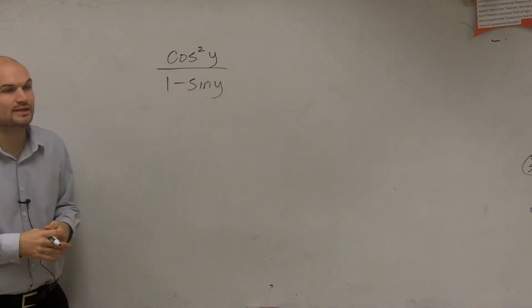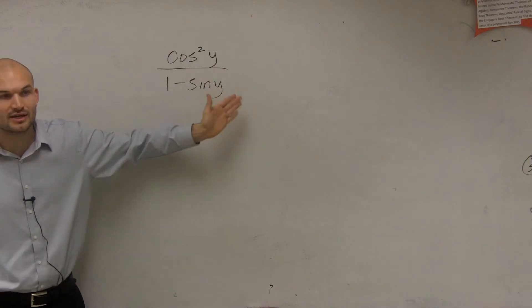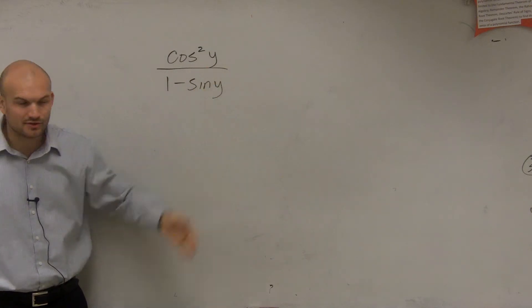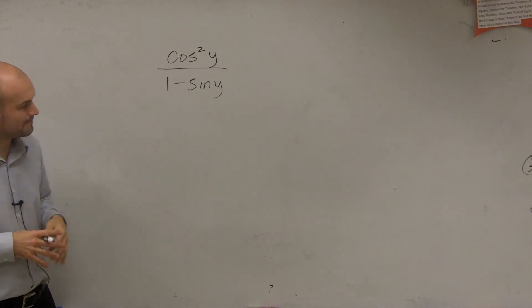Now, there's a couple different ways we can look at this. Usually to get rid of a rational expression when we have a binomial term, we can multiply by the conjugate on the top and bottom. And that's something you could look into and try, maybe see if that might help you simplify it.